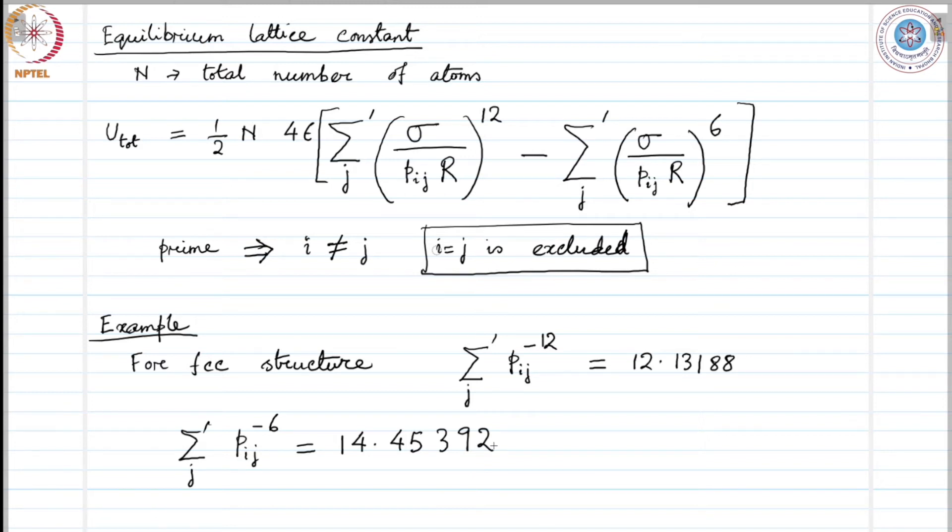In FCC we have 12 nearest neighbors and these two series they rapidly converge. Now, the nearest neighbors contribute the maximum of the interaction energy in the inert gas crystal, which is obvious.